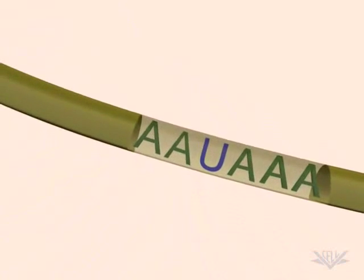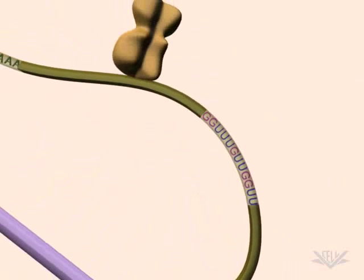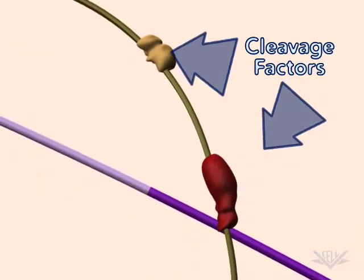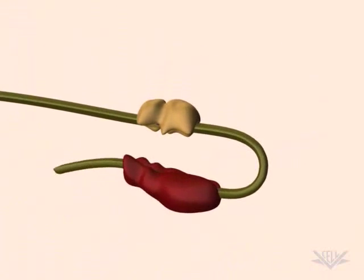Specific nucleotide sequences in the mRNA are bound by cleavage factors. The 3' end of the mRNA is next moved into the correct configuration for cleavage.